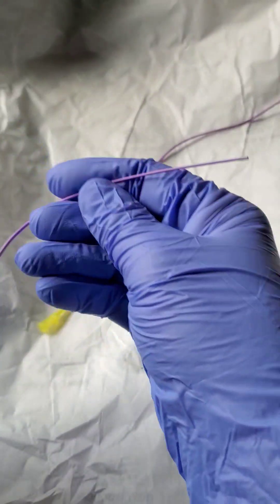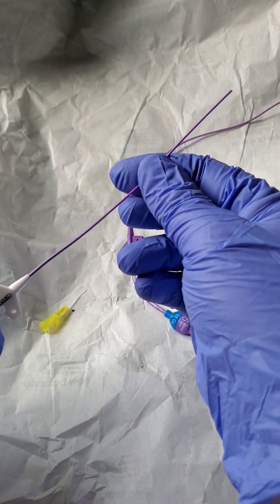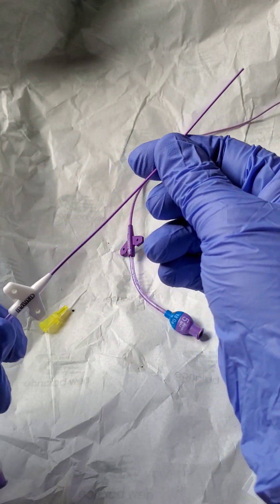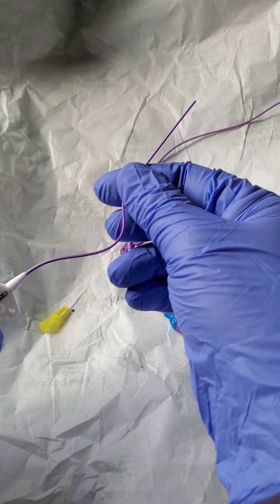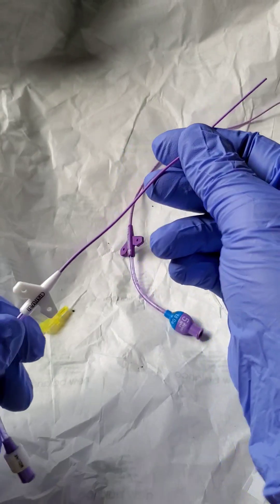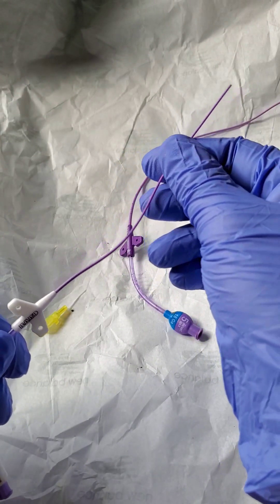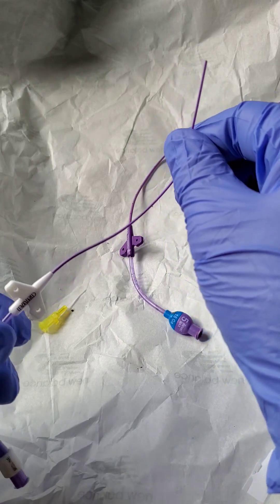And the midline is what I call a glorified IV line. It's twice to three times as long as the simple IV, and it simply provides more secure access into the vein. It does not go past the armpit. It should not.